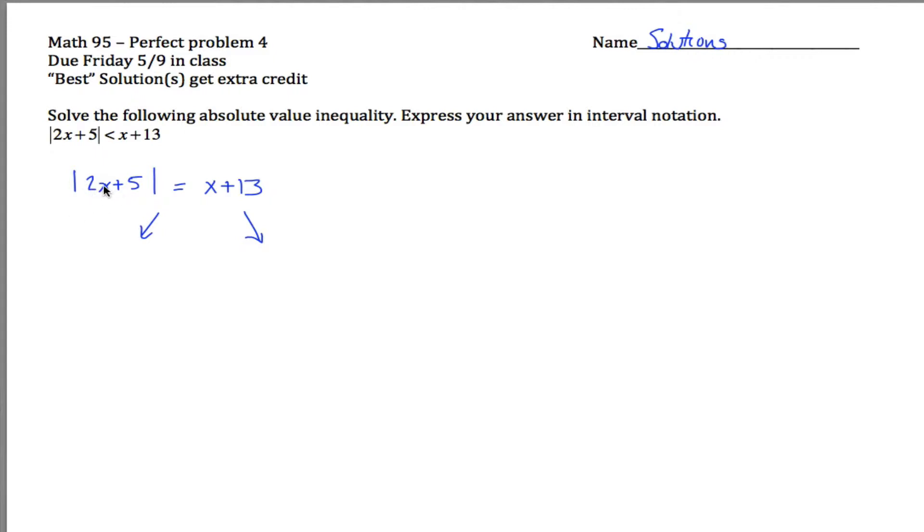I don't know what x is, which means I don't know what 2 times x plus 5 is. It might be a positive number, it might be a negative. I don't know. Well, if 2x plus 5 is a positive number, then the absolute value symbols aren't doing anything at all.